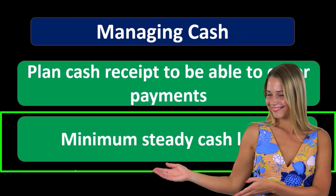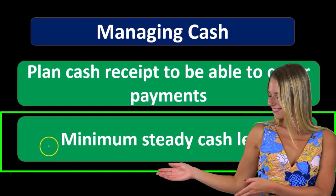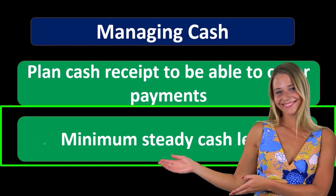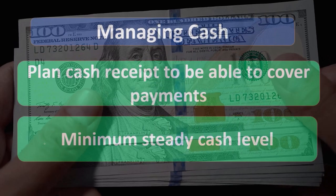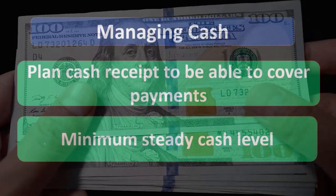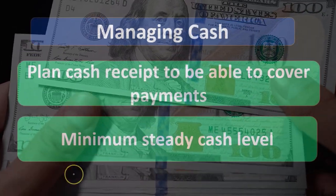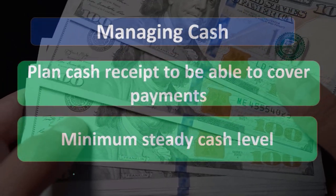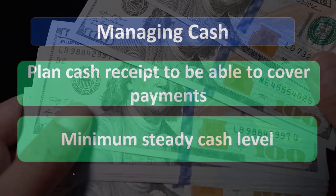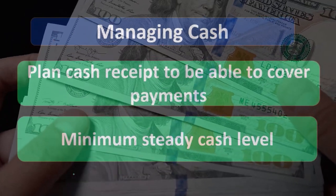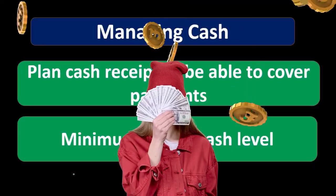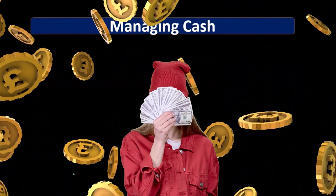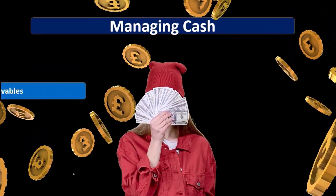We want to have enough cash to be able to make payments. If we have too much cash, we're not being optimal with our purchasing power. And if we don't have enough cash, we're not going to be able to pay our bills. If we don't have a minimum relevant cash level, we're not going to be able to go after those opportunities that may arise and need a little bit more cash at any given time.